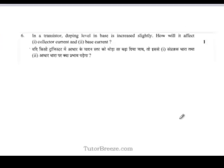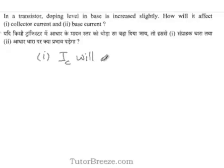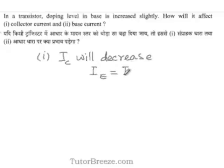In a transistor, if the doping level of the base is increased slightly, then the collector current will decrease. That's because the total emitter current is equal to the base current plus the collector current.